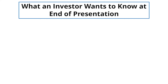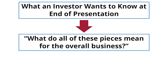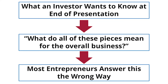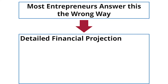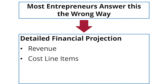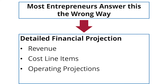In any presentation, by the end, the investor wants to know: I've got all of these pieces and they seem to make sense — what does it mean for the overall business? What founders will often do is put together a spreadsheet or a financial projection that goes through in detail what the revenue is going to be, what the different line items of cost are going to be, and when things are going to come in.